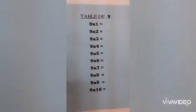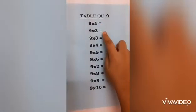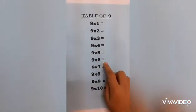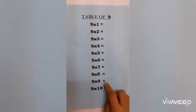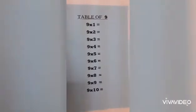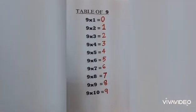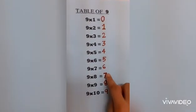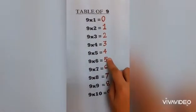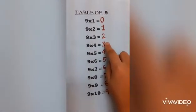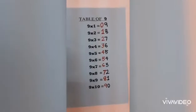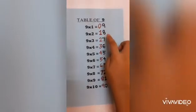Now nine's table. Write zero to nine: zero, one, two, three, four, five, six, seven, eight, nine. Then write the opposite way: zero, one, two, three, four, five, six, seven, eight, and nine. So you got nine's table.